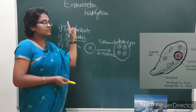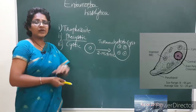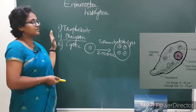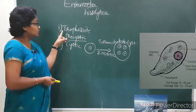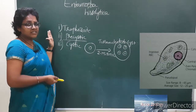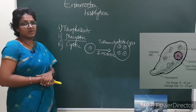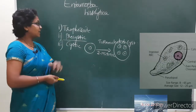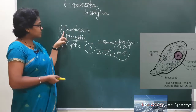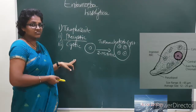The first life cycle is Entamoeba histolytica. Before entering into the life cycle, we should know the different types of stages of Entamoeba histolytica. They are the trophozoite stage, the pre-cystic stage, and the cystic stage.